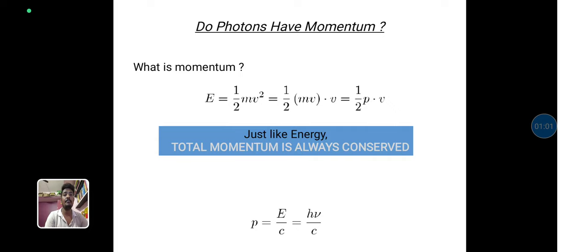Do photons have momentum? What is the momentum? E is equal to half mv squared. We divide it into v separately: half mv dot v. We have to put mv is equal to p. We already know half p dot v. Just like energy, the photon momentum is always conserved. P is equal to E by v. We substitute E is equal to h nu by c. P is equal to h nu divided by c. Both are the momentum concepts, so the photon also has momentum.